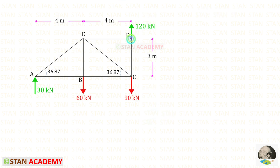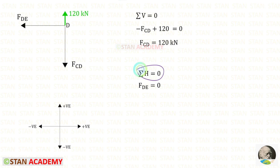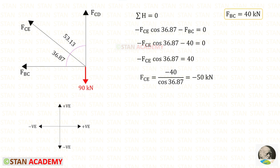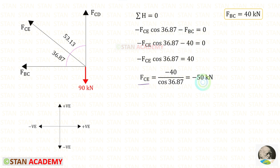Taking joint D and applying sigma V = 0: one force acts upwards (positive) and one downwards (negative). For FCD we get 120 kN. Applying sigma H = 0, FDE is 0. Now taking joint C, we only need to find FCE. Resolving FCE horizontally with cos 36.87: FCE acts left (negative), FBC acts left (negative). Substituting FBC = 40, for FCE we get −50 kN. Let us enter all the values of P.